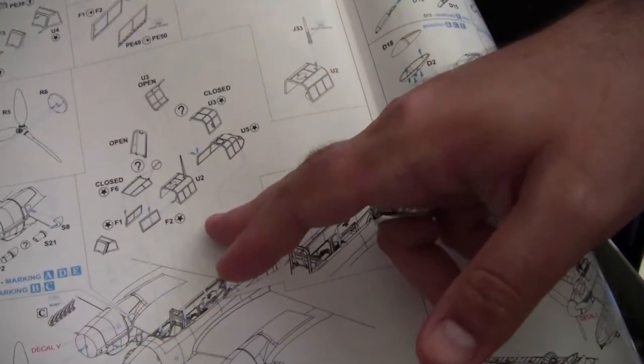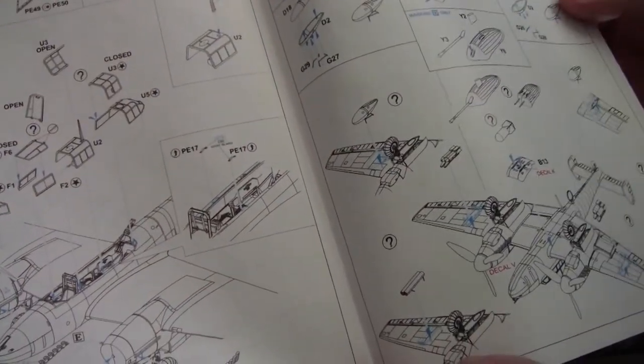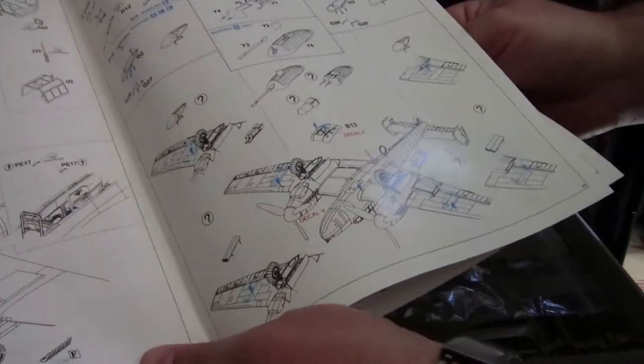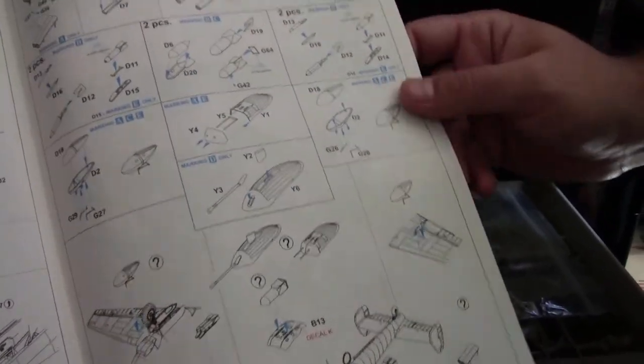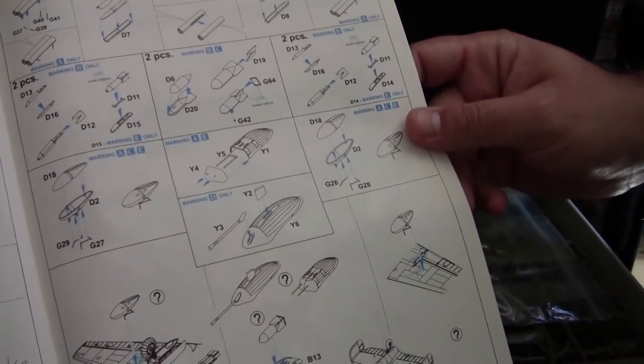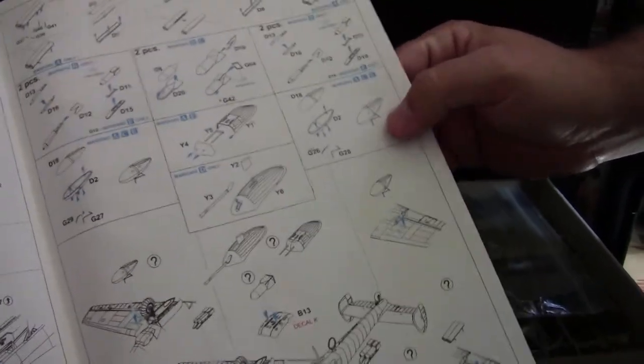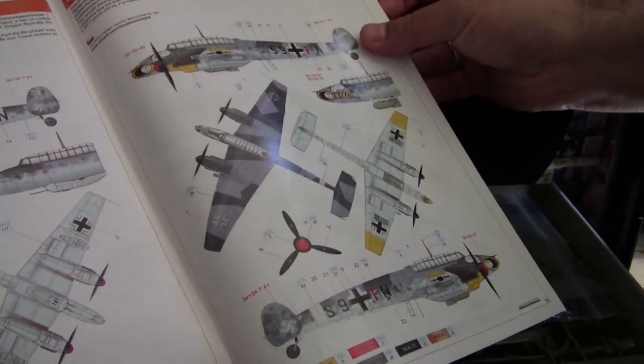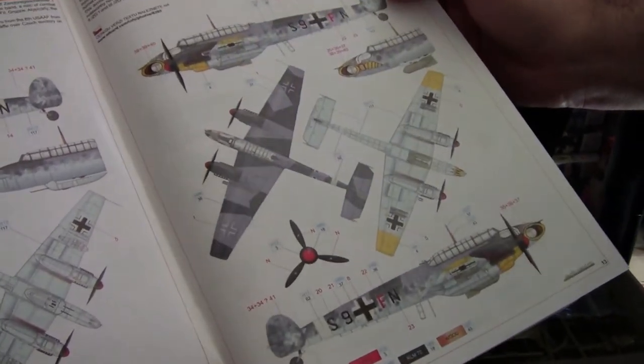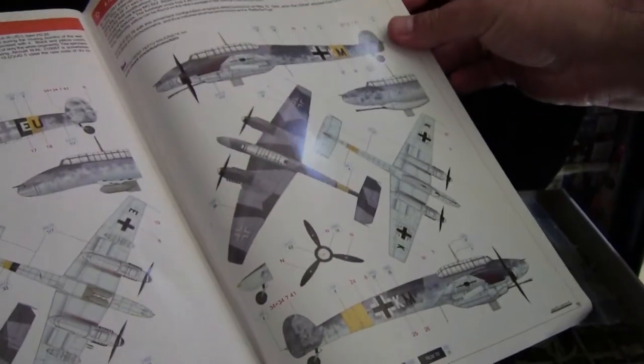Again, as I said, we have our different options. The canopy sections, open, closed, and so forth. As well as our different armament options and the breakdown of which markings get which armament option. Now, the fact that they do include them does mean you're not limited to what they include. They give you a total of five different options from various theaters of the war.